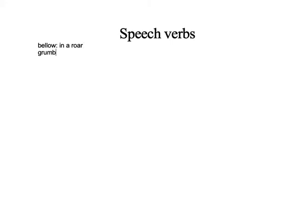The next one is grumble. These are very different from verbs like say or tell, because say and tell don't have any extra meaning — they just refer to the action of speaking, to open your mouth and pronounce words. This list of speech verbs have meaning inside them, extra meaning. Like bellow, which is in a roar, or grumble, which is when you complain.